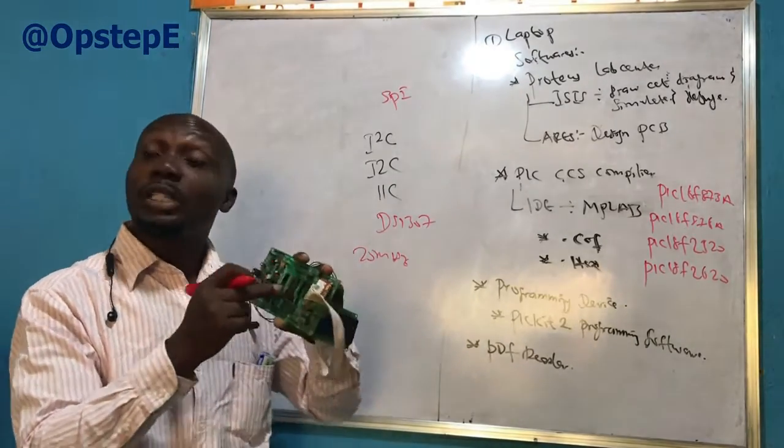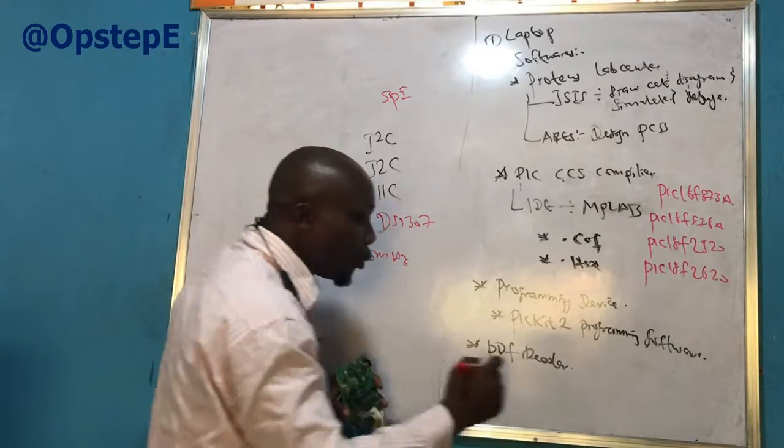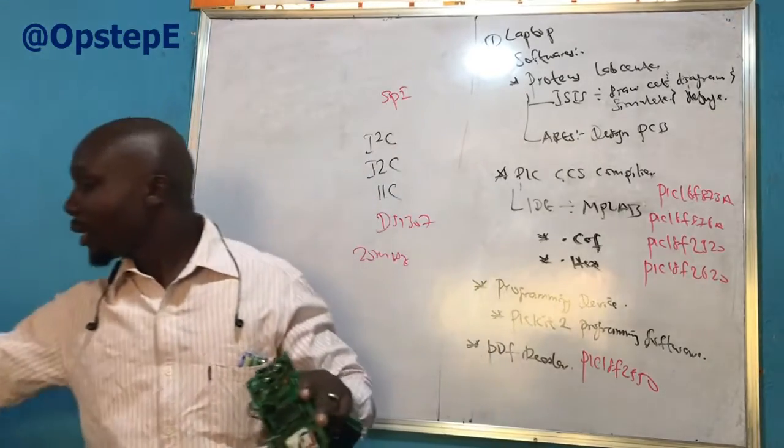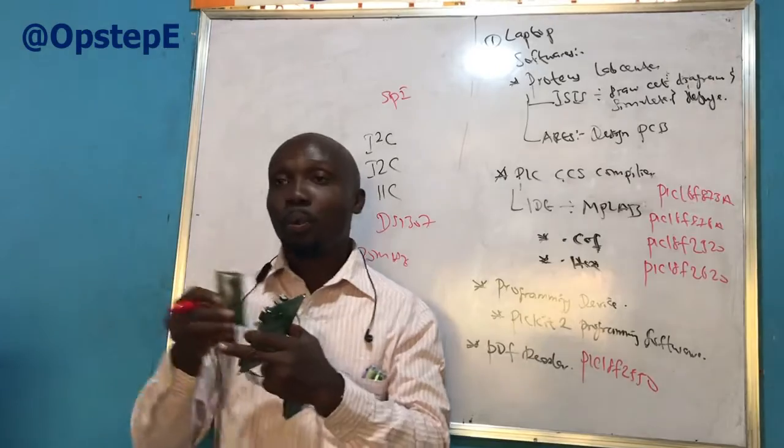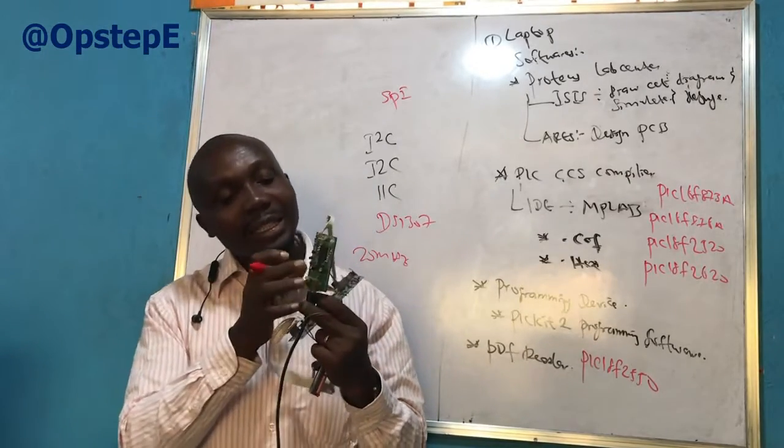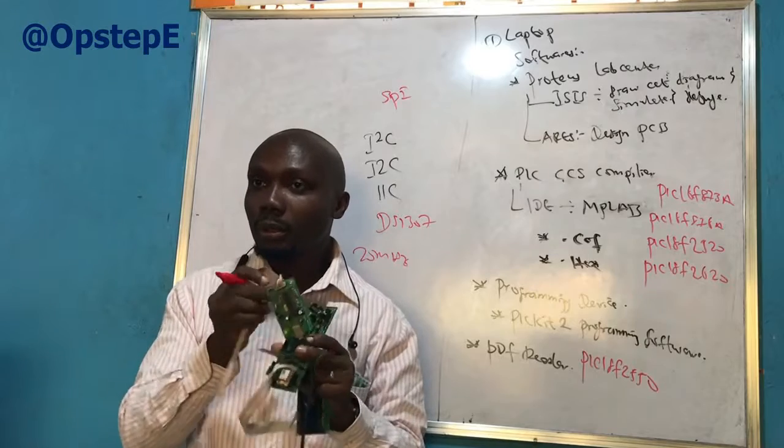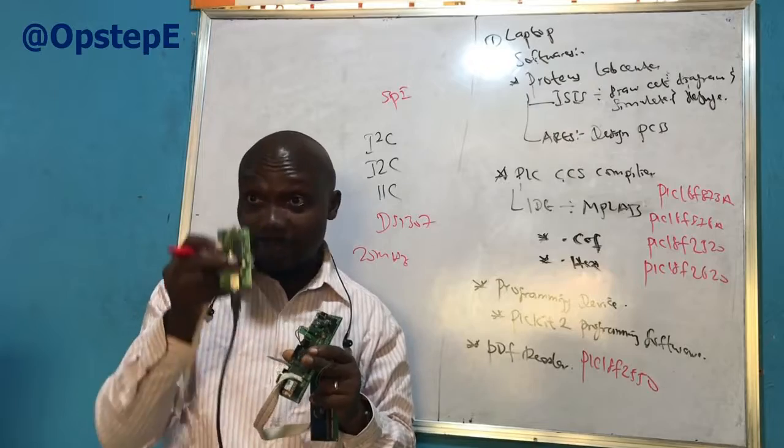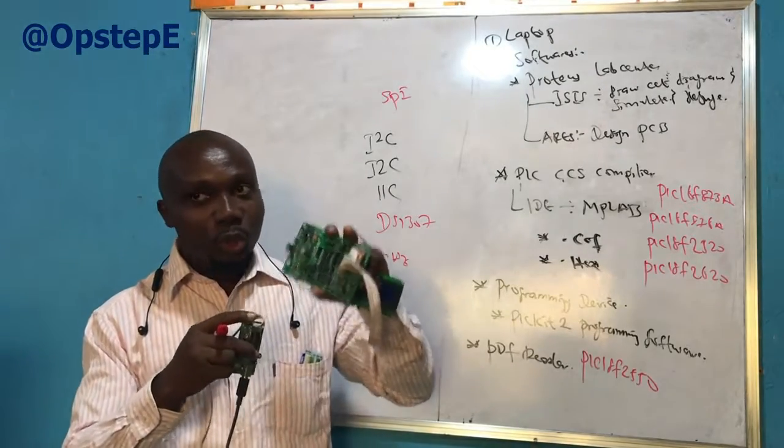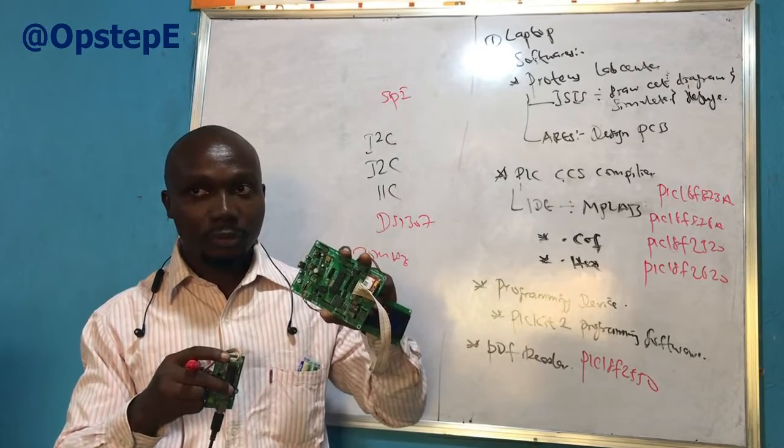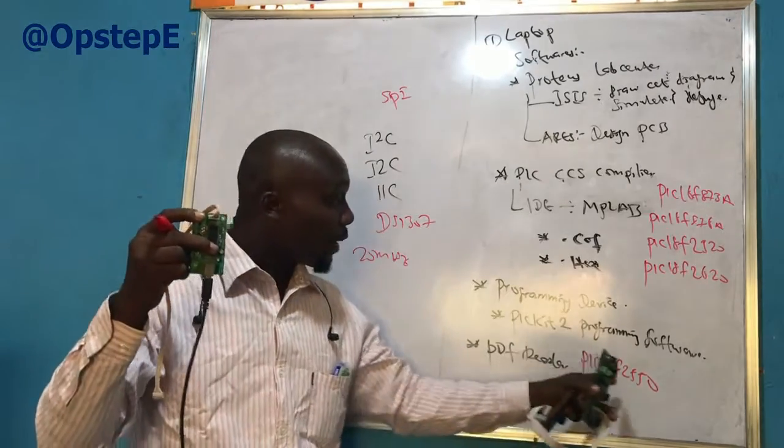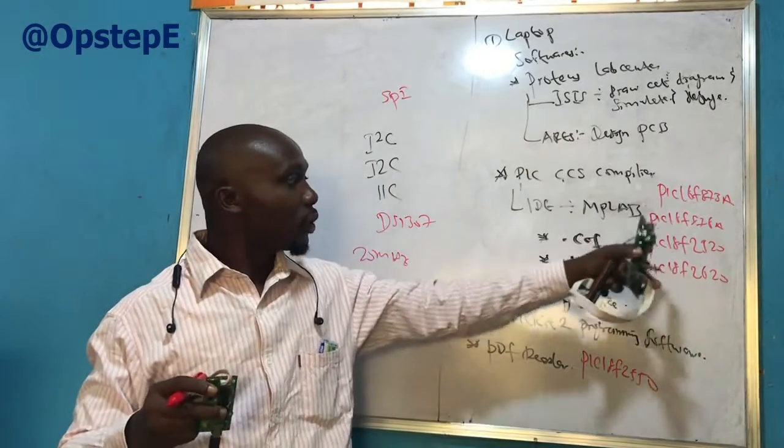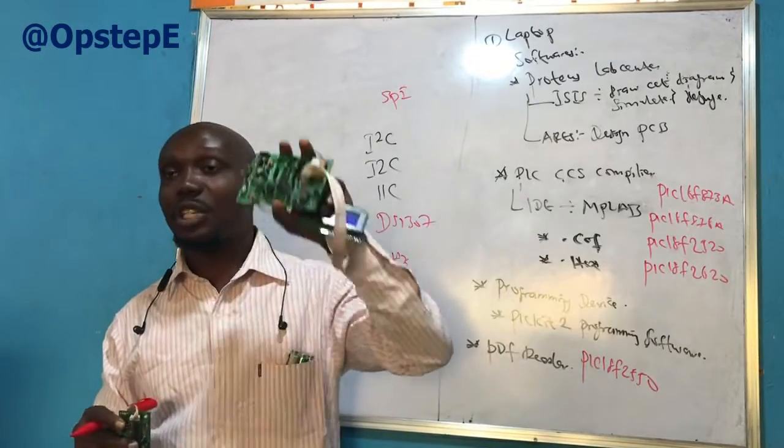Now the other 28 pin ICs, a very good example would be the PIC 18F2550, that is the one that you have in your program. That IC can actually do USB, even though it's a 28 pin IC. But the one here cannot do USB directly. The 2550 can. But any of these, 873A, 876A, 2520, and 2620 cannot interface USB directly.